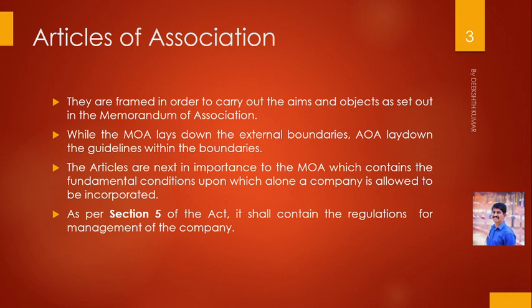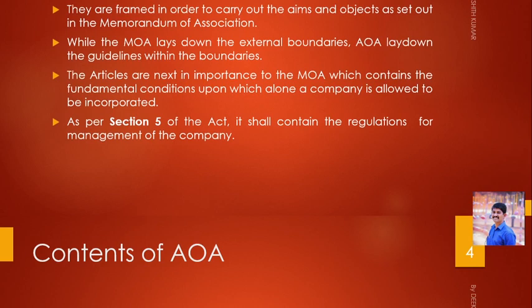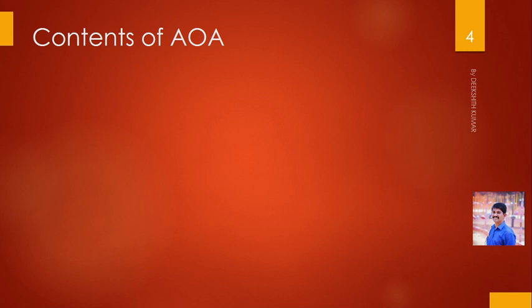Section 5 says that articles contain rules related to company's various day-to-day management matters. The articles of association also mention details about those areas. Let us see the contents — unlike memorandum of association which has specific clauses like name clause, object clause, etc., in articles of association they are called contents, not clauses. Generally, a company contains these contents.